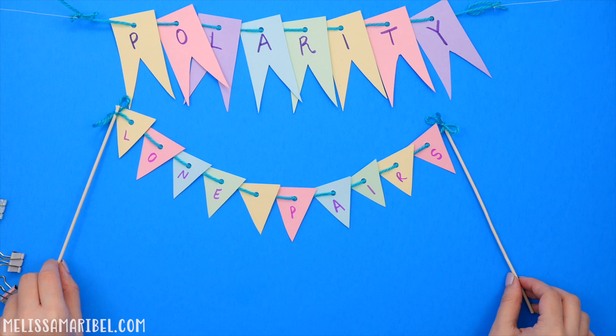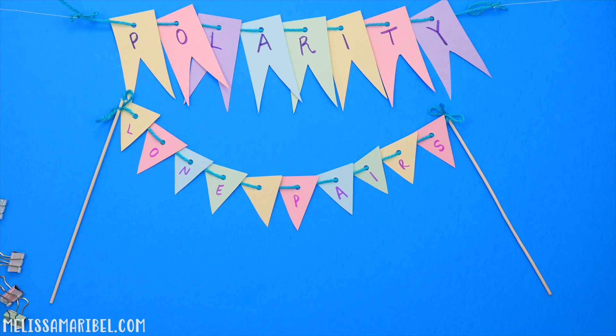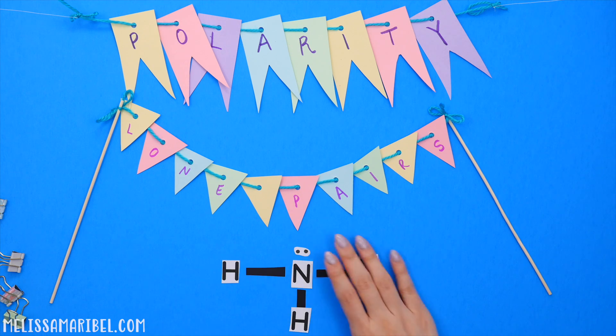Third, lone pairs on the central atom. Lone pairs on the central atom add to polarity. For example, NH3 may seem symmetrical since we can cut it down the middle and it's surrounded by the same atoms. But since there's a lone pair on that central atom of nitrogen, that adds to an unequal pull of electrons, which makes the overall structure polar.